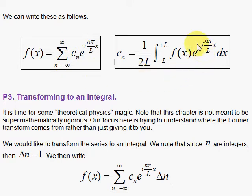We start by noting that n as an integer advances by 1, so Δn = 1. So I multiply by 1 in the form of Δn on the right-hand side.